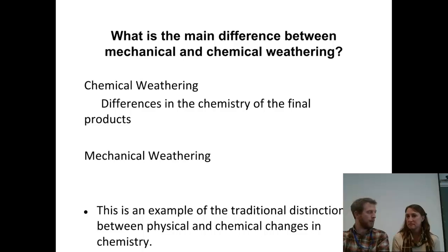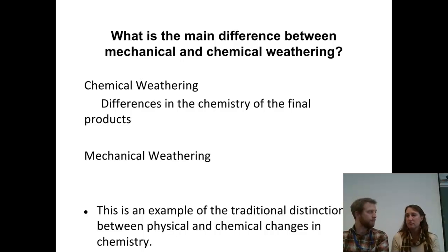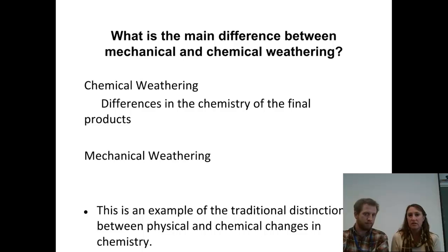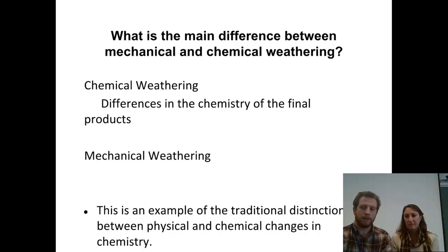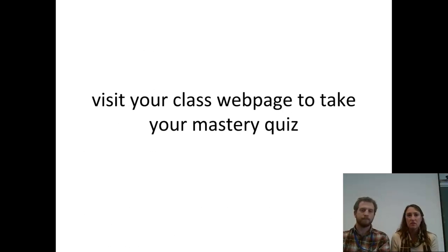With chemical weathering we ended with new substances like clays. But with mechanical weathering — like with quartz — we just started with a bigger piece of quartz and ended with a smaller piece. Think back to chemical and physical changes: physical changes — mechanical weathering — break things into smaller pieces and increase surface area, which we'll talk about in the next video. Chemical weathering, like a chemical change, creates a new substance with a different chemical composition — either by water breaking it apart, water attaching to it, or oxygen attaching to it. That's it for us — go to your class webpage, grab your quiz, and we'll see you in class tomorrow.